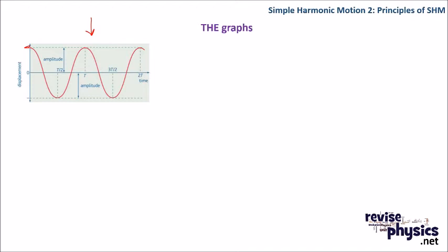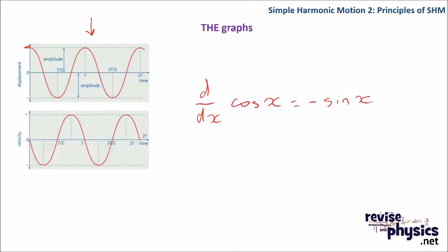Let's say I wanted to draw a graph of velocity against time. Well, velocity is obtained by differentiating displacement. And the displacement, by differentiating a cos function, I get a minus sine function. So my graph for velocity against time is a minus sine graph.